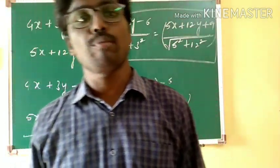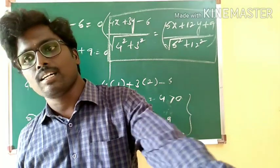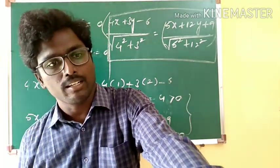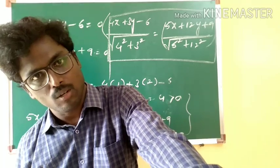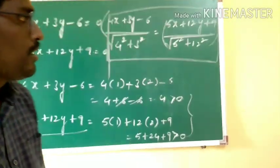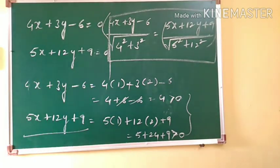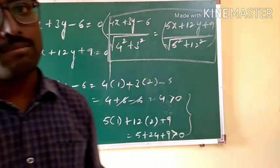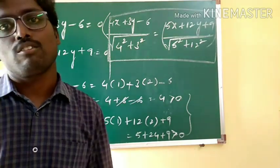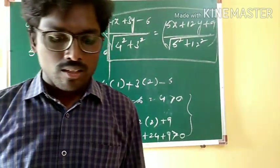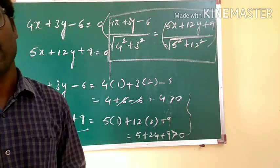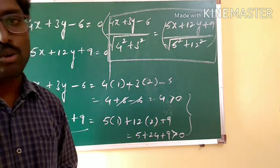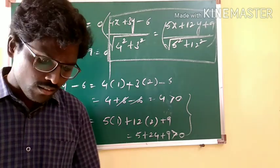So we have covered: the acute angle bisector equation, the obtuse angle bisector equation, and the bisector containing a given point. For acute or obtuse bisectors, I told you two methods — one is finding the angle between the lines: if tan θ lies between 0 and 1, it is acute angle bisector; if tan θ is greater than 1, it is obtuse angle bisector. Also the method using a1a2 + b1b2. And for the bisector containing a given point, calculate the expression values — same sign means plus, opposite signs means minus.